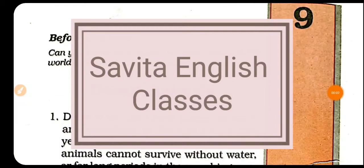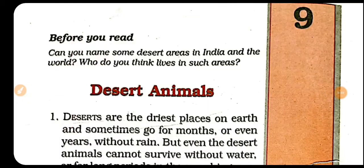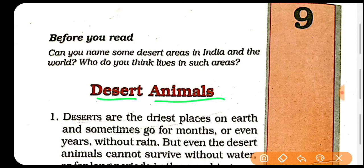Hello students, welcome back. In this video we will do chapter number 9 for class 6th. The name of the topic is desert animals — marusthal mein rahne wale janwar. We will learn about which animals live in the desert and how they survive. Let's start our chapter.